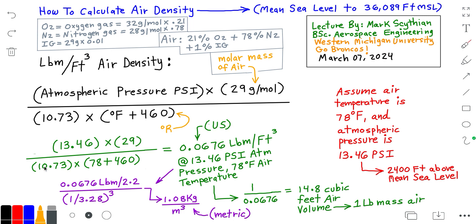Then divided into 10.73 times the Rankine absolute air temperature, in this case 78 degrees Fahrenheit plus 460. This yields an air density of 0.0676 pounds mass per cubic foot at 13.46 PSI atmospheric pressure and 78 degrees Fahrenheit air temperature.